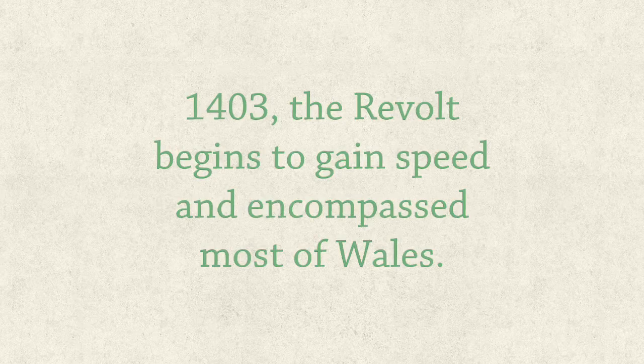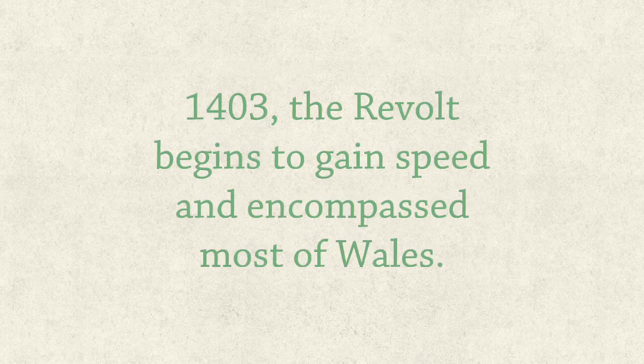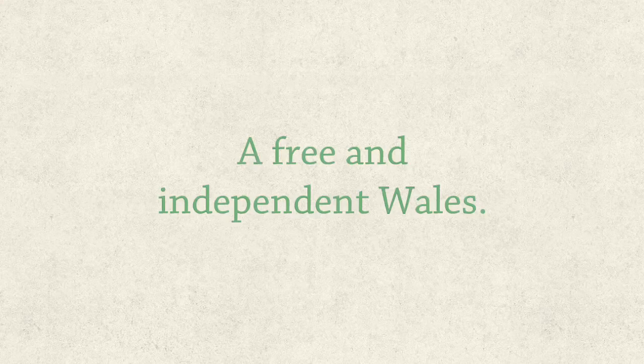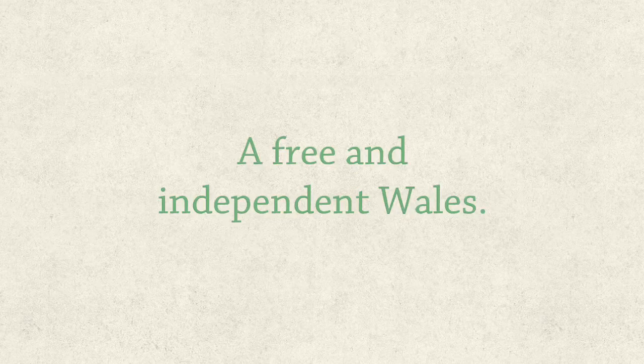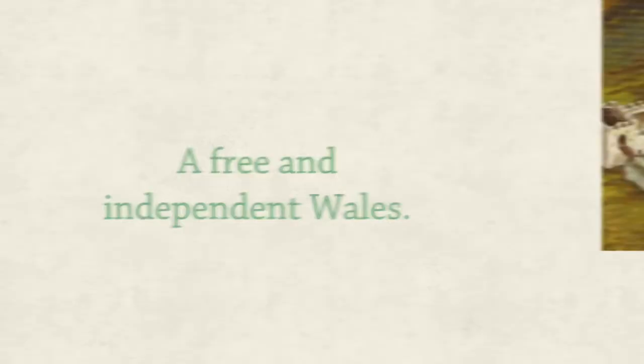Fast forward to 1403, which arguably marks the year when the revolt became truly national. Owen had already taken the central and northern parts of Wales, but in 1403 he began to strike out to the west and the south, taking more and more land and gaining more power. Glyndŵr had clear aims — he wanted a free and independent Wales away from English and particularly Henry IV's rule, and he wanted Wales to have its own parliament. This is why the revolts went on for so long and why he tried to conquer as much land as possible.